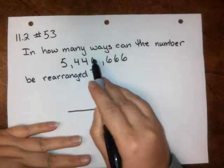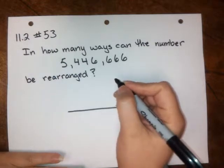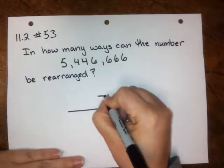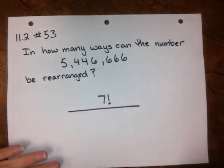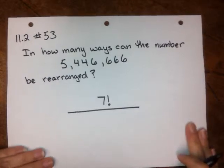So in this number, there are one, two, three, four, five, six, seven digits in this number. So we're gonna put a seven factorial in the numerator. So however many digits there are, it's that many factorial that go into the numerator.